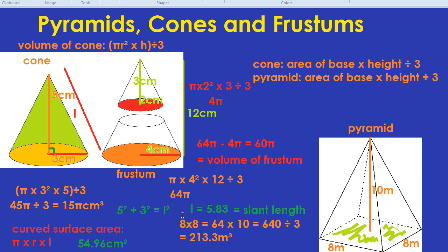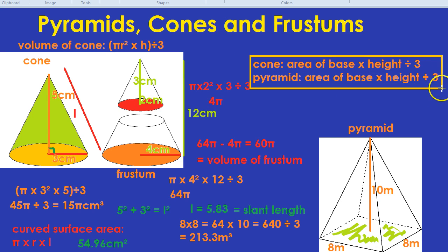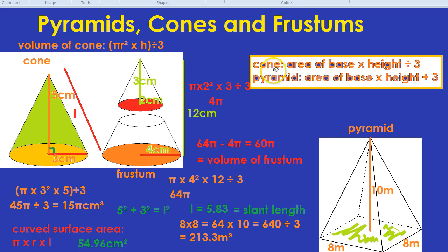To recap everything we learnt today: the volume of a cone and the volume of a pyramid is simply the area of the base, times by the height, then divide by three. And as an added extra, if we want the curved surface area of a cone — the formula is given in the formula sheet — you do pi times the radius times the slant length. And if they don't give you the slant length, you can work it out using Pythagoras.